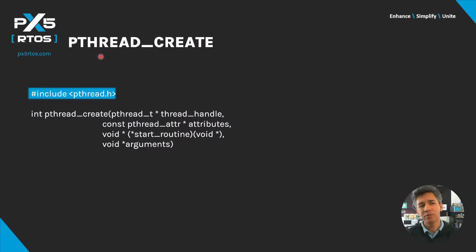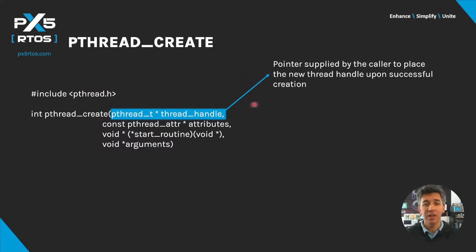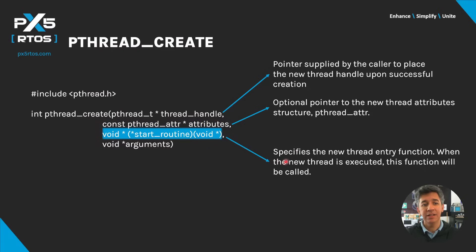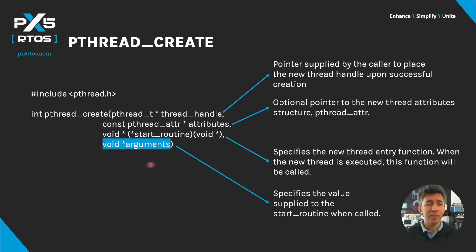Creating a thread will require the familiar pthread header, then a pointer to the thread handle, then an optional pointer to any thread attributes or null if you don't need any, then the thread entry function — the function which will be called when this thread executes — and optionally any arguments required by that function.